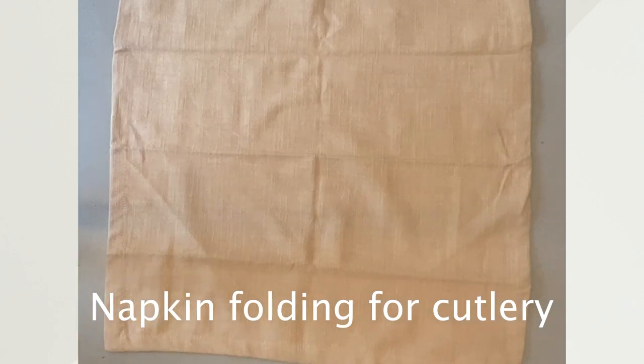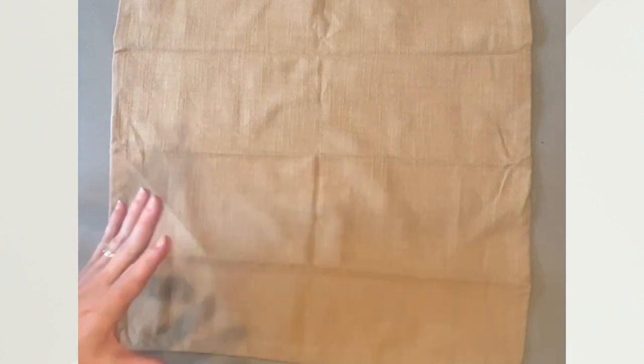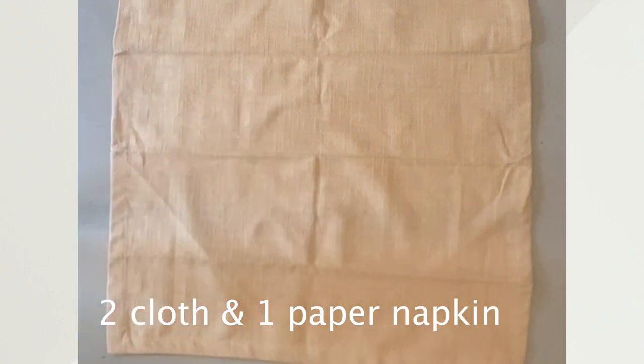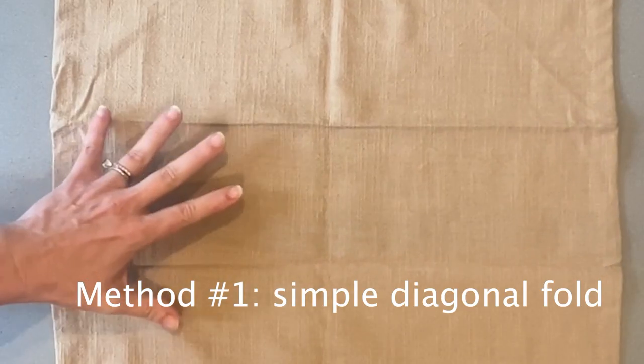In this video I'm going to show you three simple napkin folding techniques for cutlery. First two are with a cloth napkin and the other one is with a paper napkin. This is an 18 inch by 18 inch size.